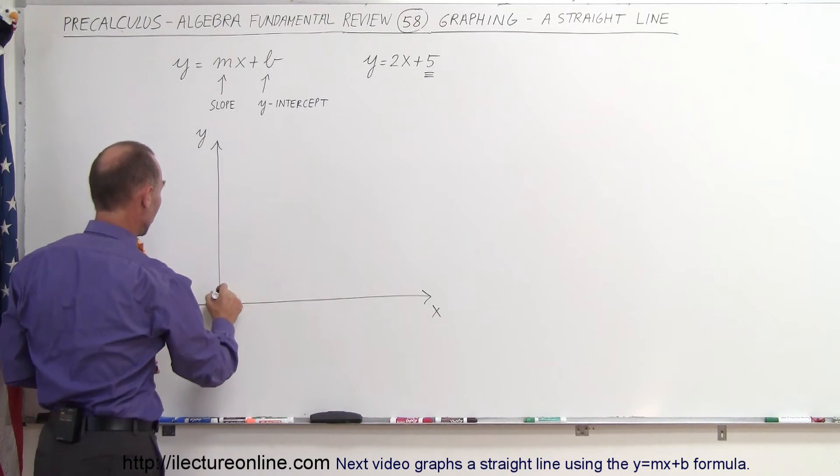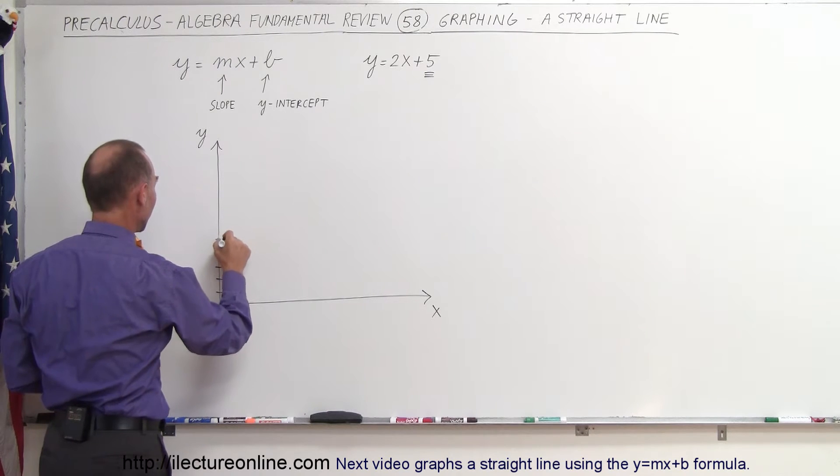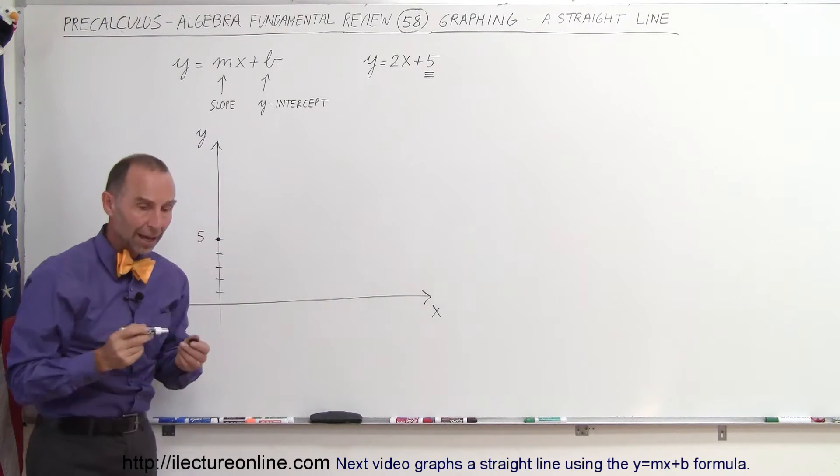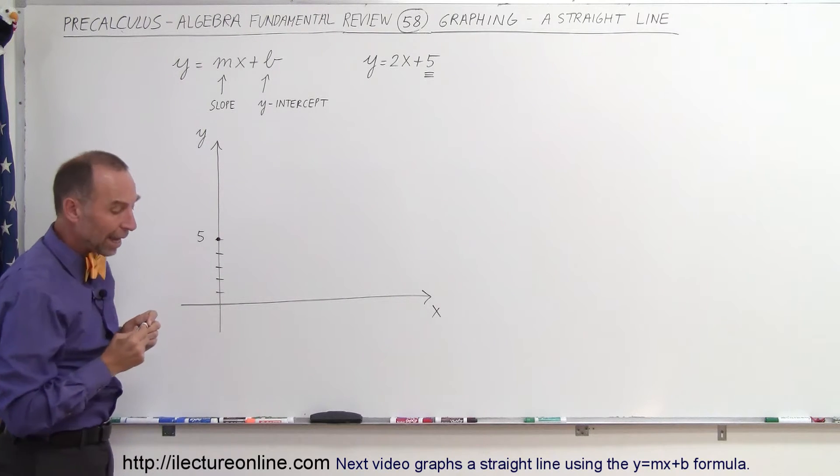So the intercept first: 1, 2, 3, 4, 5. There's a point, y equals 5. That's where the line will cross the y-axis.